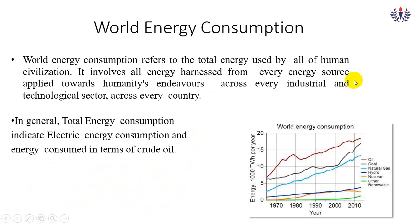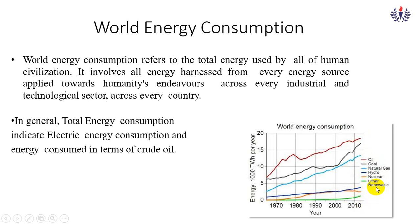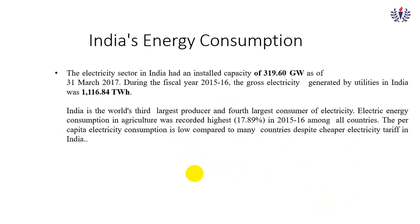Under world energy consumption, energy is harnessed from various energy sources and applied across all industrial and technological sectors. Here you can see a world energy consumption chart showing energy in units of 10 watt-hours per year, based on 2015 data. You can see that oil, coal, and natural gas are all increasing. Nuclear has dropped because it is risky to use. Renewable energy is getting picked up after the 1990s and is now having more impact, with governments also giving more incentives for it.